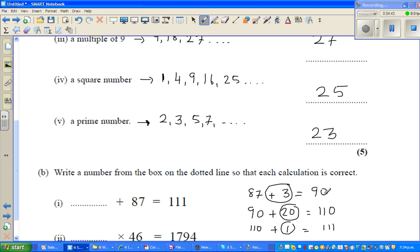This is how I work it out - first go to the nearest ten number, then make it 110, then add 1. So 20 plus 3 plus 1 is 24. Or you can take away 87 from both sides - that would be a bit difficult.